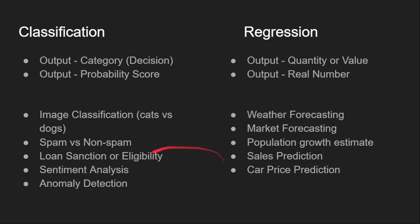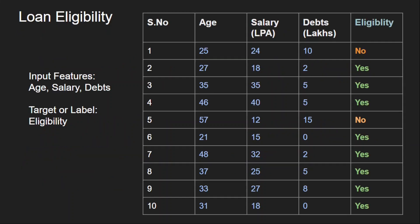Now, if we want to solve any of these problems using a neural network, how should we approach it? Let us consider a classification problem of loan sanction or loan eligibility. Depending on some factors, we need to decide whether the candidate is eligible for a loan. We are considering three features: the candidate's age, salary, and outstanding debts. The output will be a yes or no decision, and from the network's point of view, it will be a probability of eligibility.